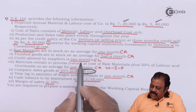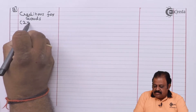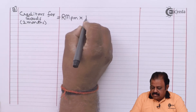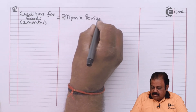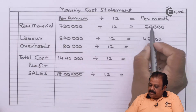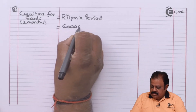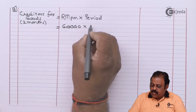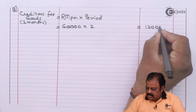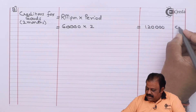Credit allowed by supplier is two months. Creditors for goods: two months. Raw material per month multiplied by period — raw material per month sixty thousand multiplied by two months — equals one lakh twenty thousand. This is a current liability.